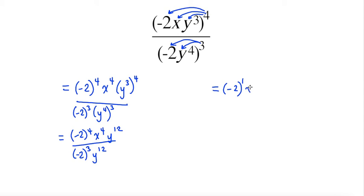Then I'm going to move on to my x. I don't have an x term on the bottom, so I'm just left with x to the exponent of 4. And then I'm going to move on to my y. 12 take away 12 is 0.